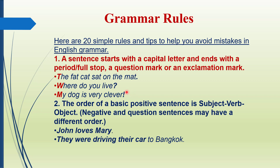Exclamation mark kya hota hai — yeh mere videos mein maujood hain, aap dekh saktay hain. Yeh link aap upar top pe dekh saktay hain aur aap isko bhi seekh saktay hain agar aapko nahi pata. Then number 2: it is the order of a basic positive sentence — subject, verb, and object.